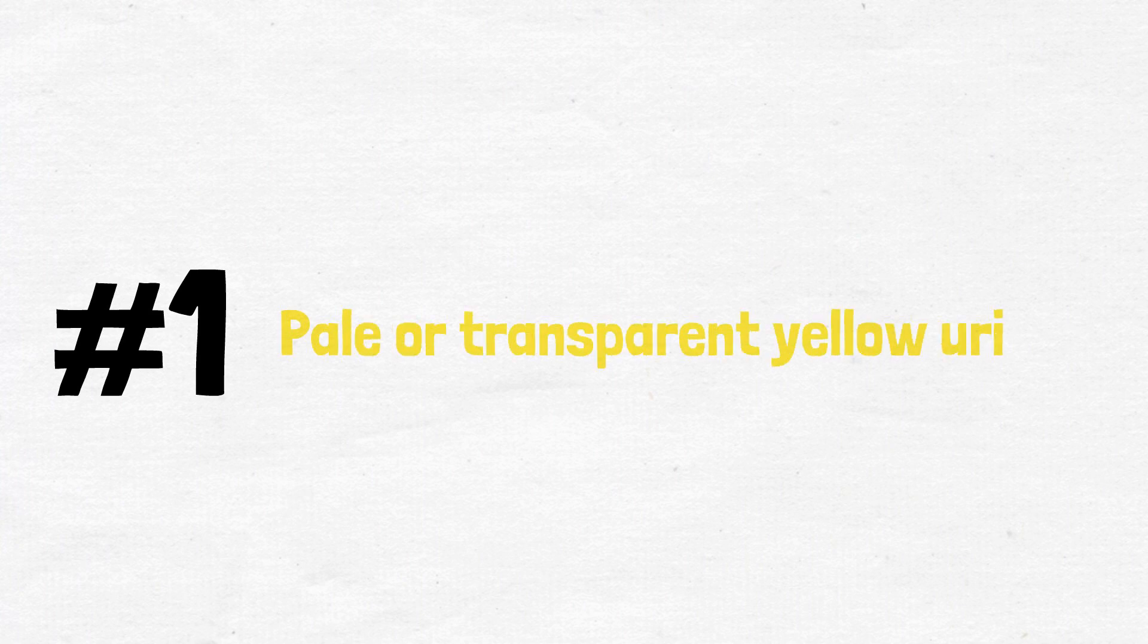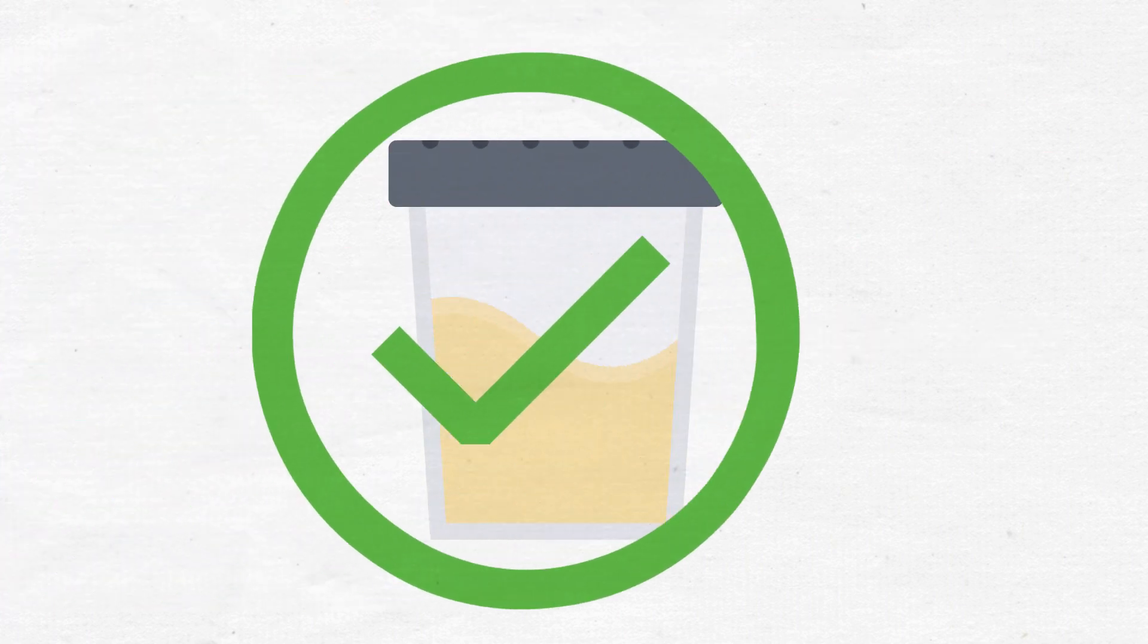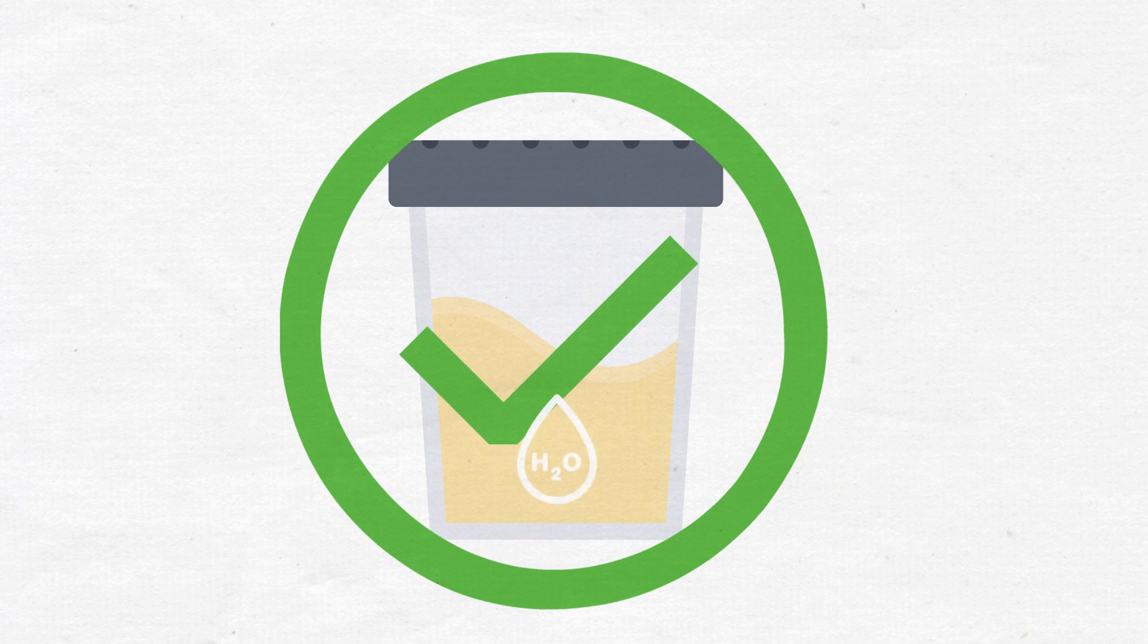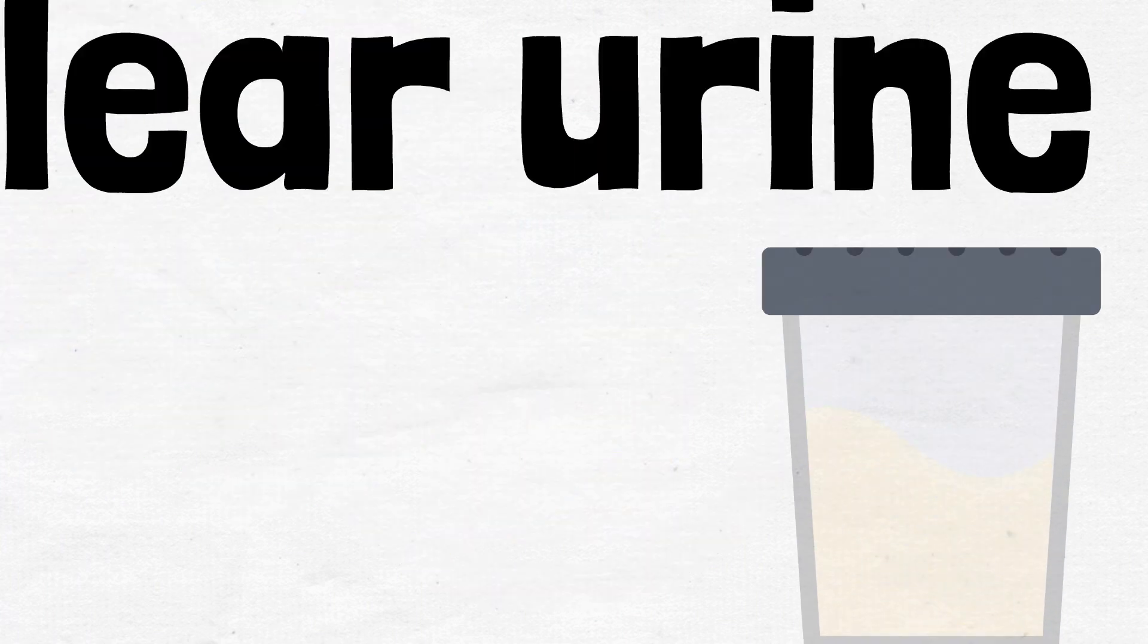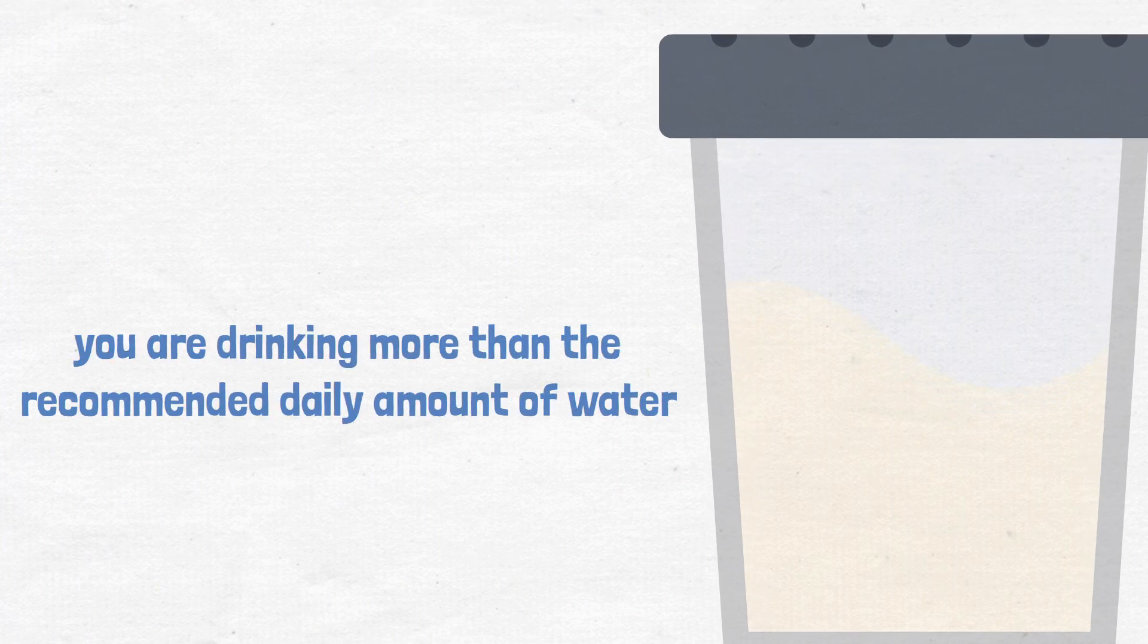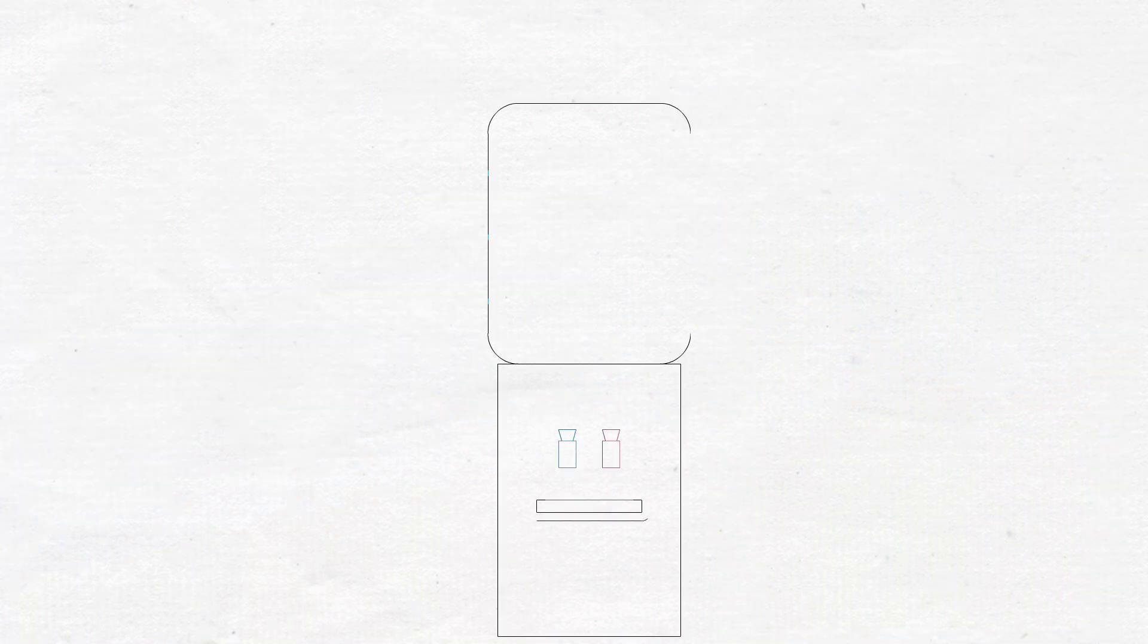Number one: pale or transparent yellow. It is typically a sign that a person is hydrated and drinking enough water. But if your urine is clear, then you are drinking more than the recommended daily amount of water. Although hydration is beneficial, drinking too much water can cause your body to lose electrolytes.